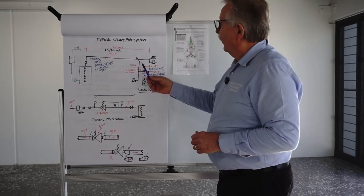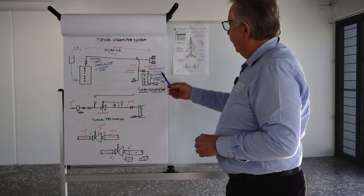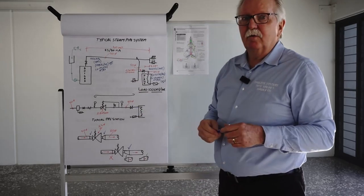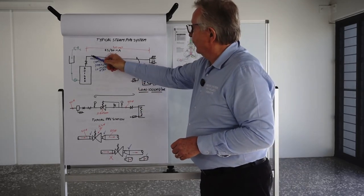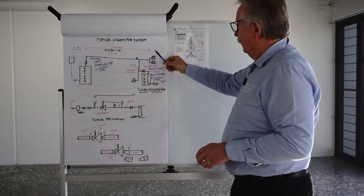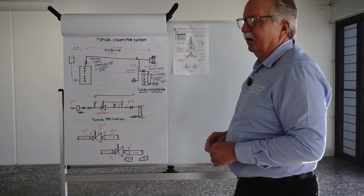So if you take this scenario where we've got 60 metres of pipe, if we were to put our pressure reducing valve here, which you could do if you wanted to, and we could reduce our 1000 kPa down to 300 kPa and deliver steam through the process to the plant at 300 kPa.